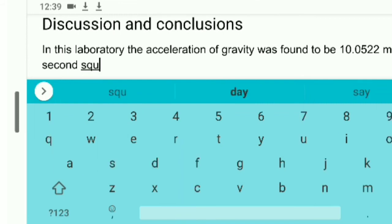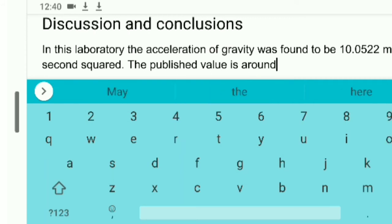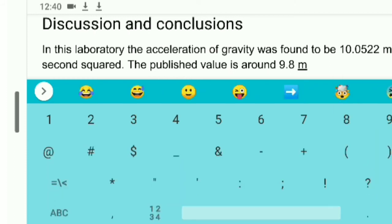I will also be reporting what my raw error is. The difference between the 10.05 meters per second squared and the 9.8. The 9.8 is the published value. The value that other scientists have found when they measure the acceleration of gravity. So I'm very close. I'm, as noted, about 0.25 meters per second squared away from the published value. That's a good result. Report that to the reader.